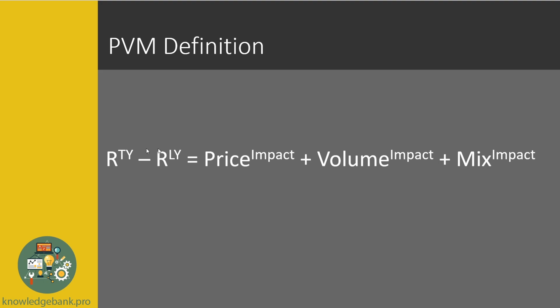To summarize: revenue this year minus revenue last year — sometimes we call it year-over-year revenue variance. In this case I'm using revenue last year; it could be revenue plan or forecast — some sort of target value. We're trying to understand the variance between these two types of revenue. Normally for revenue, we would have three buckets that drive that variance: either price, volume, or mix.